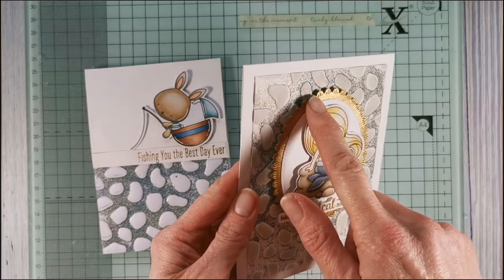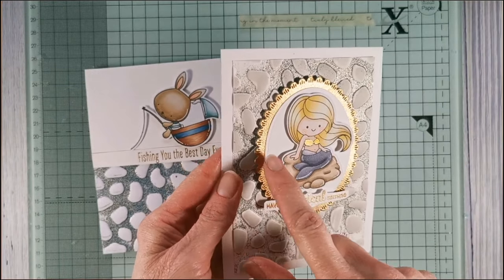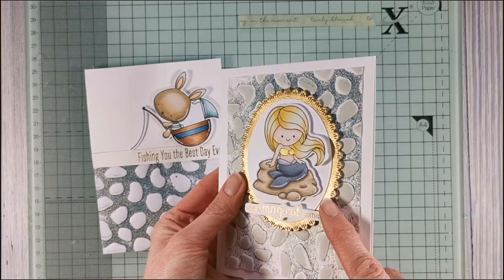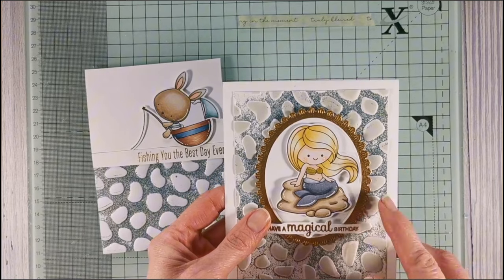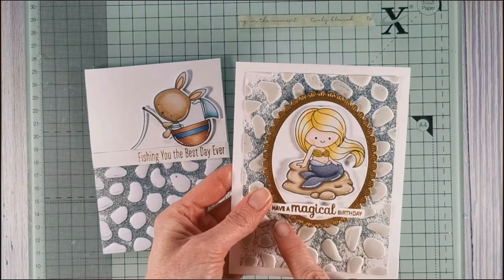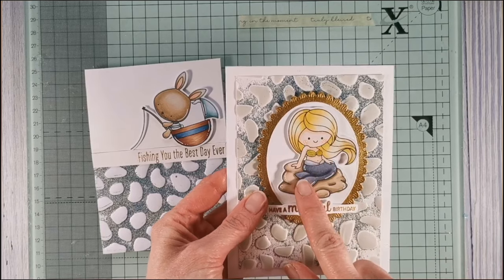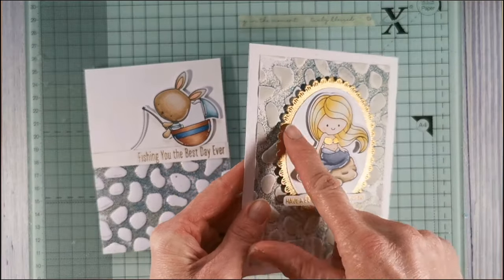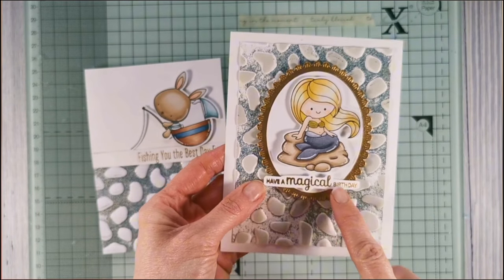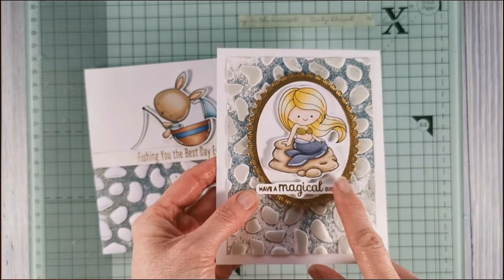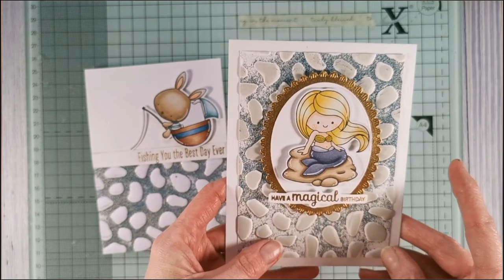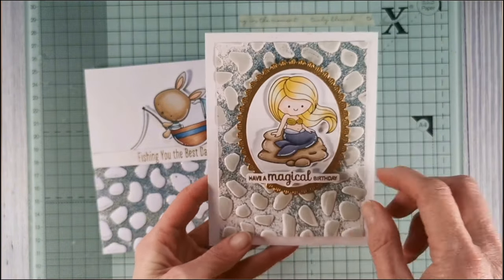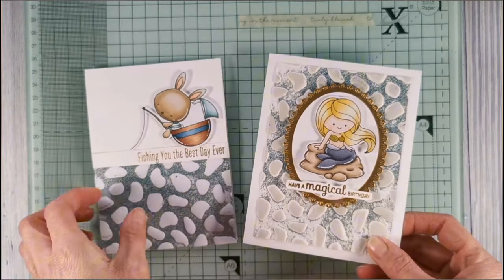So I've colored it in in Copic markers which coordinate with the background colors, and then I've used a die set from Spellbinders to cut that oval frame. I've applied embossing ink around the edges of that and I've heat set it in gold embossing powder. Then I've stamped the sentiment and I've done it in the same gold to match the frame, and I really like how that one's turned out. I think the gold in the frame really picks out the gold in that sea salt embossing powder.